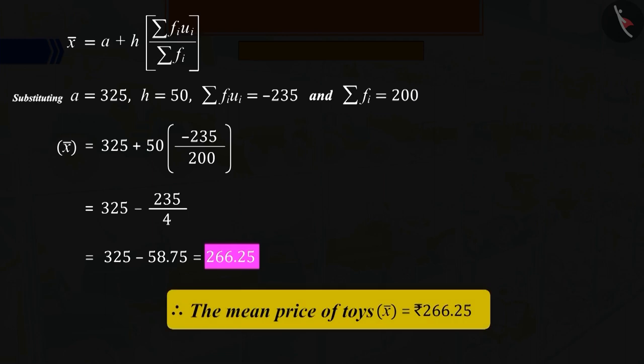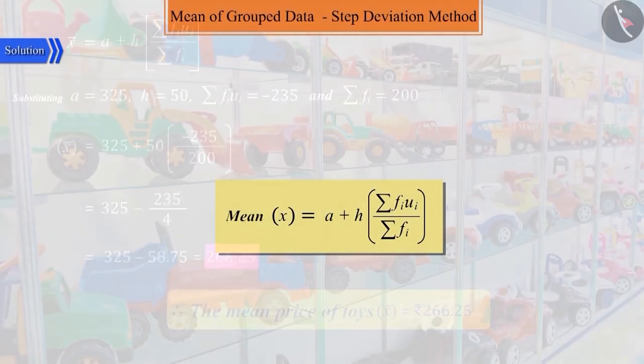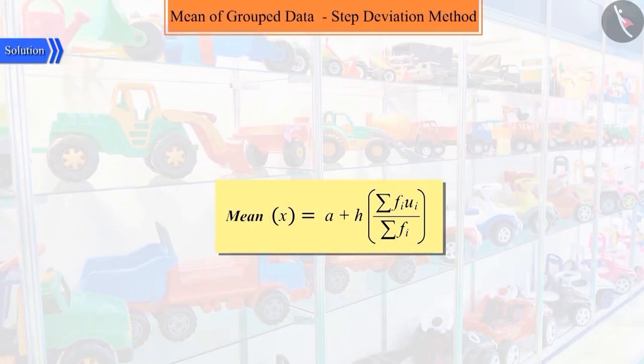So we can say that the mean of the toys would be 266 rupees and 25 paise. This method of finding the mean is called the step deviation method.